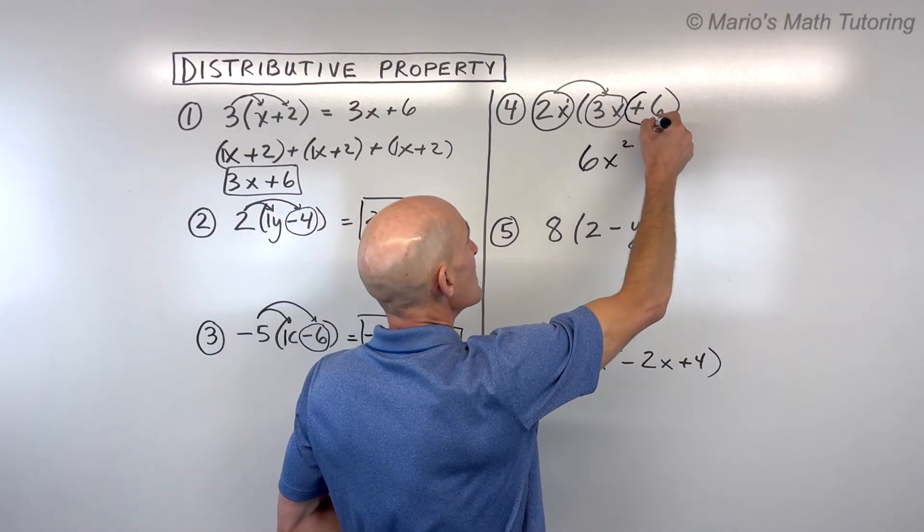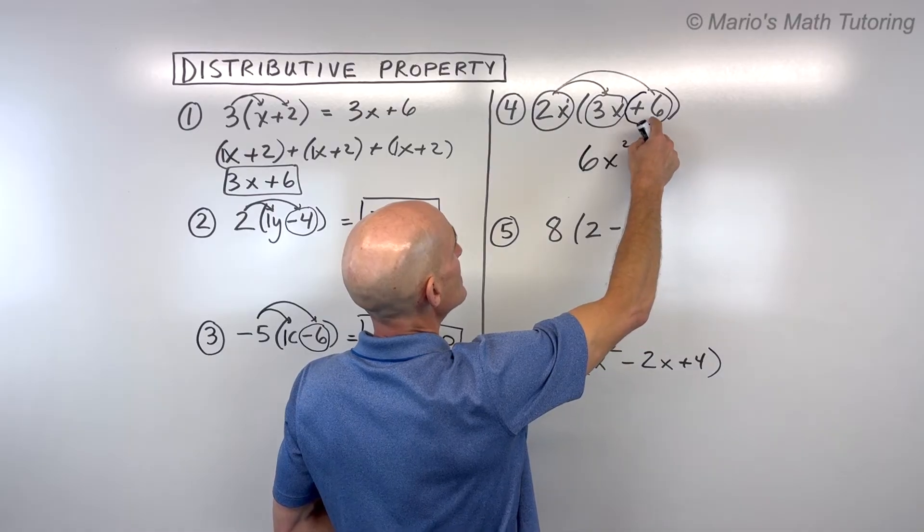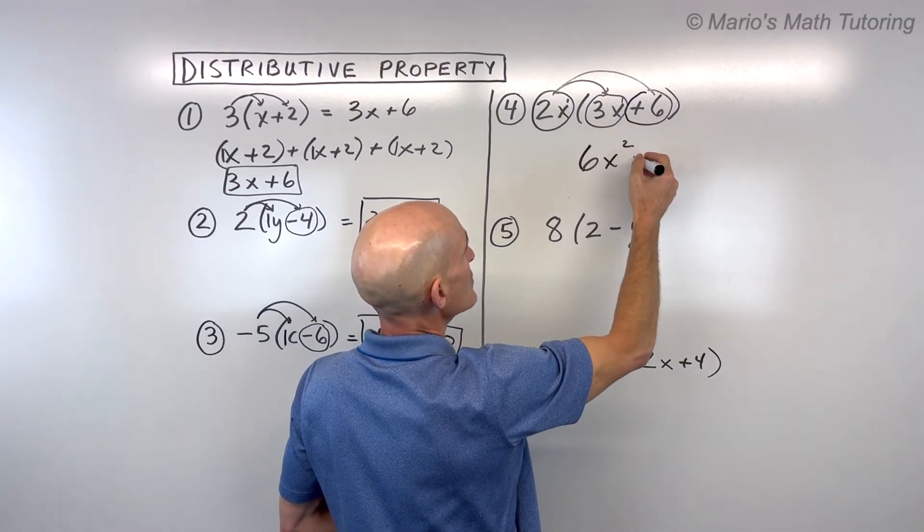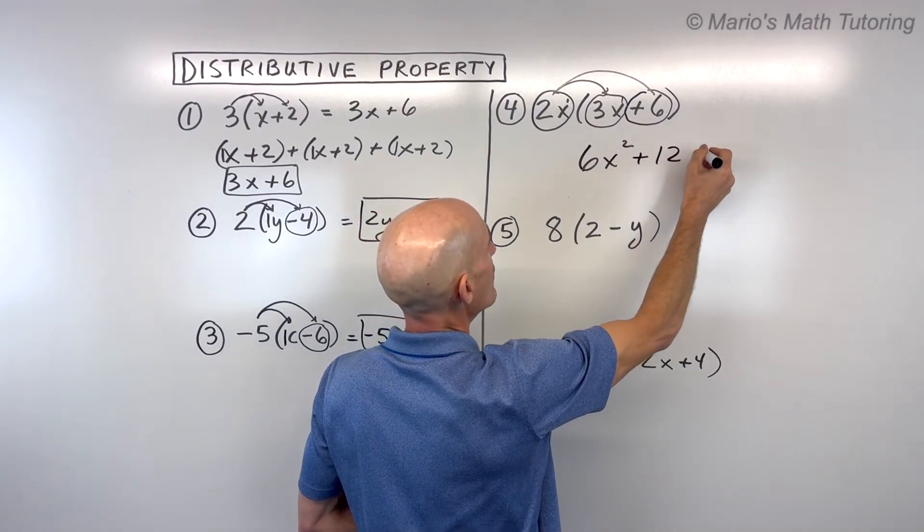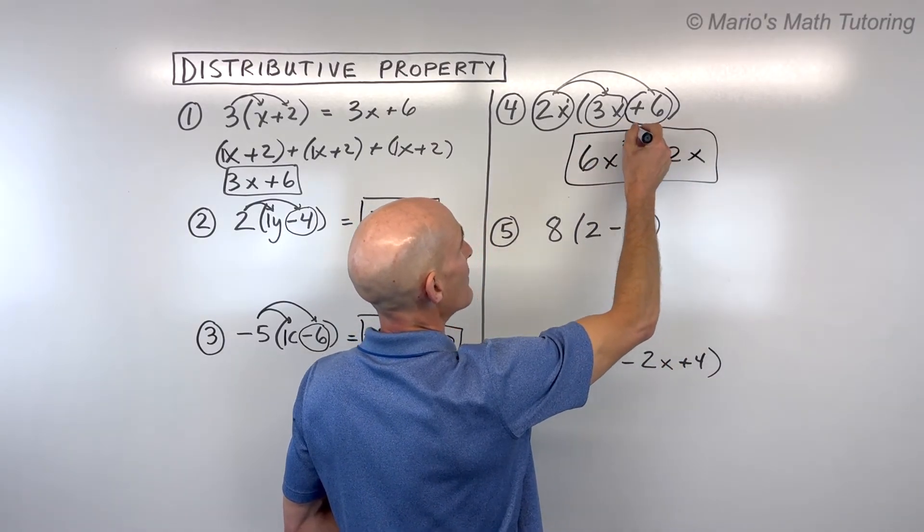And then same thing here. We're capturing that sign. That's a positive 6. 2x times 6 is 6 times 2 is 12. And the x comes along with it. So this is a positive 12x, or we could say plus 12x. And you got that one.